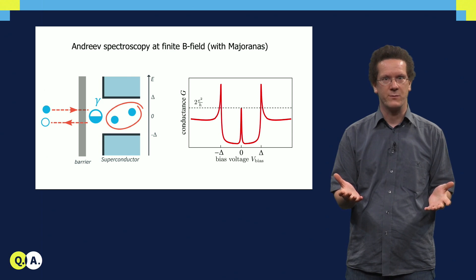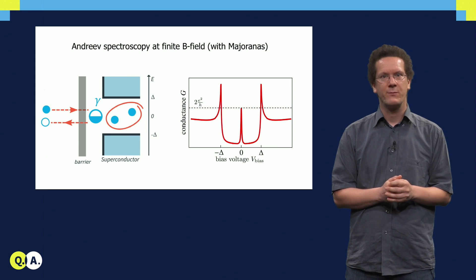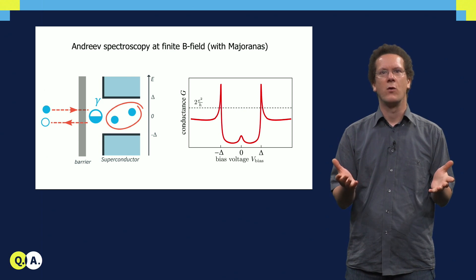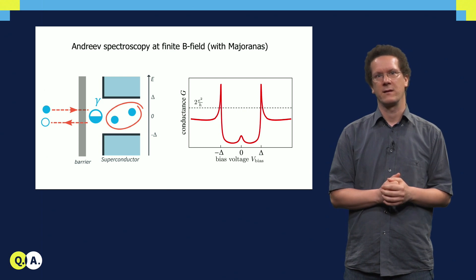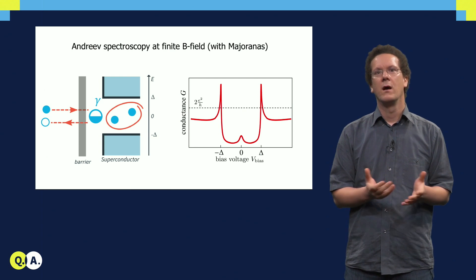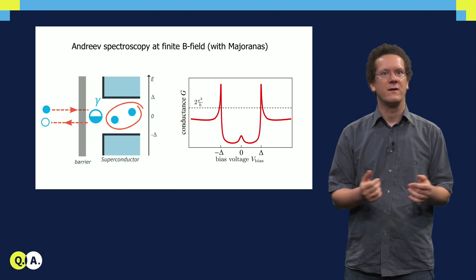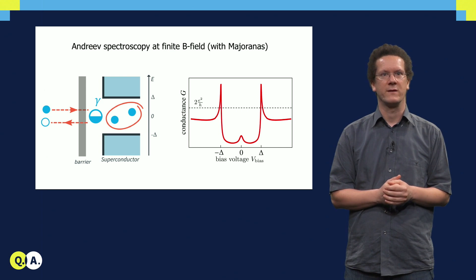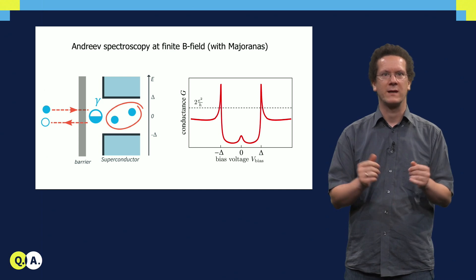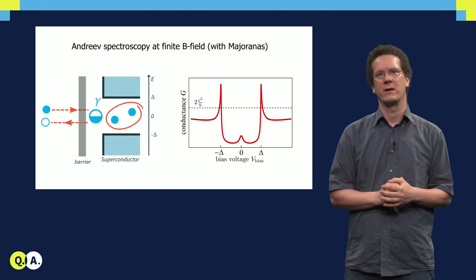At finite temperature, this peak can actually be lower if the thermal broadening exceeds the tunnel coupling. Common to both scenarios is that we expect to see a peak at zero bias voltage inside a superconducting gap as a signature of Majorana bound states.